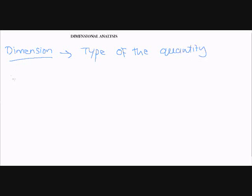For instance, in measuring distance, irrespective of whether the distance is measured in centimeters or meters or kilometers, the type of the quantity is represented by the letter L in square brackets. This would be the dimension of the distance.